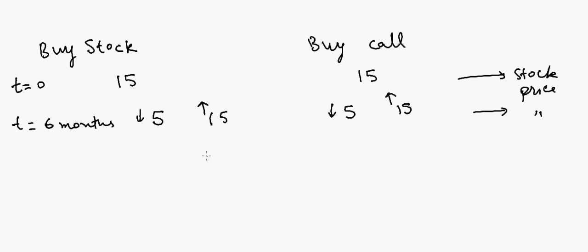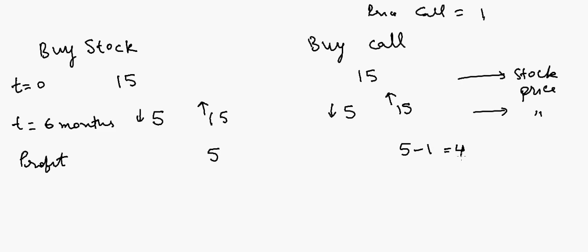Looking at profit: if the stock goes to $15, buying the stock gives you a $5 profit. With the call option, you also get $5 but you paid $1 for the call, so your profit is $4. Your profit is slightly less than buying the stock outright. However when the stock goes down, buying the stock gives you a loss of minus $5, while with the call option your loss is only $1 — the price you paid for the option. You've lowered the risk.